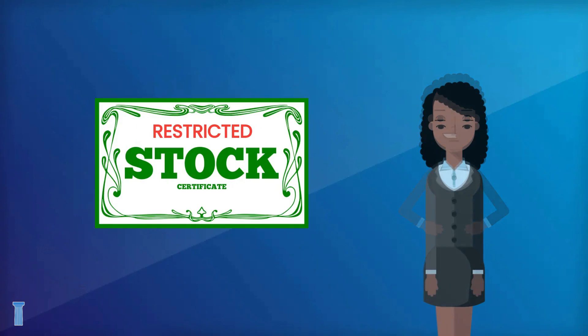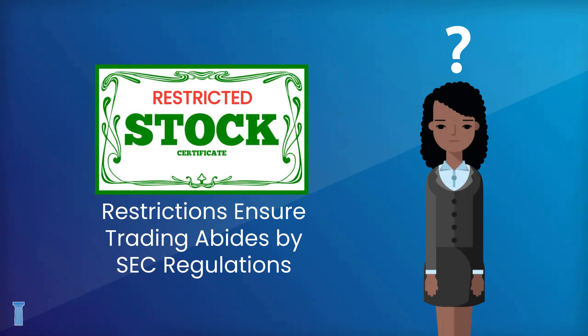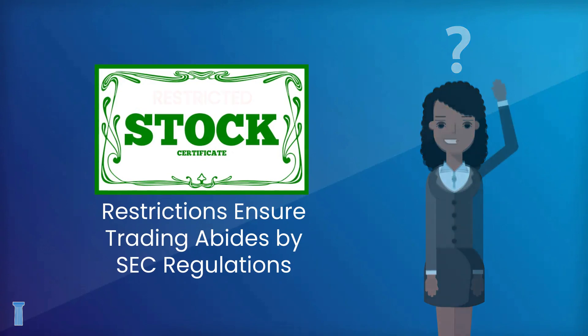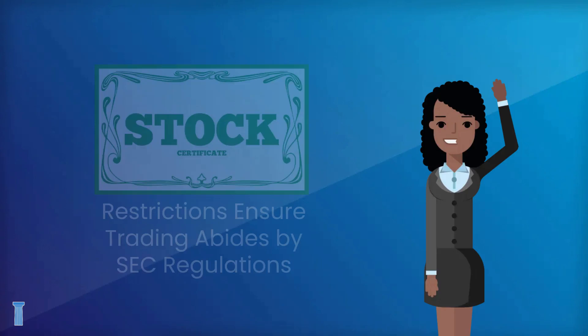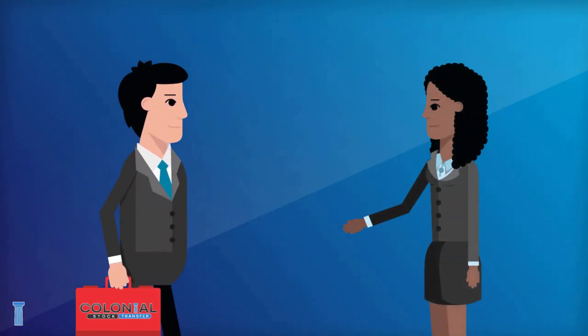You might wonder why there are restrictions on your pre-IPO shares. It's to ensure that all trading abides by the rules and regulations put in place by the SEC. Removing these restrictions is your first step towards obtaining free trading shares so that you can sell them through a broker. The stock transfer agent for your stock should be able to help you remove any restrictions applicable to your situation.